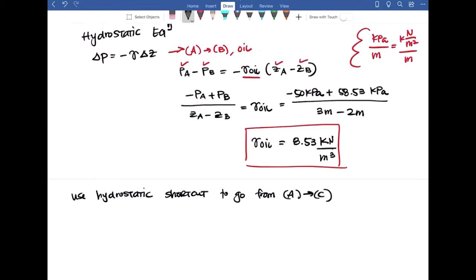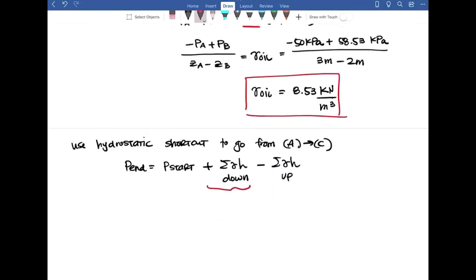I'm going to rewrite this equation. So P end is P start plus the summation of gamma H down minus the summation of gamma H up, which this portion is just saying that as we go deeper into the fluid our pressure increases, which is why we have the positive sign. And in this case, as we become more shallow, so we go higher in elevation, our pressure decreases, which is why we have that minus sign in front of it.